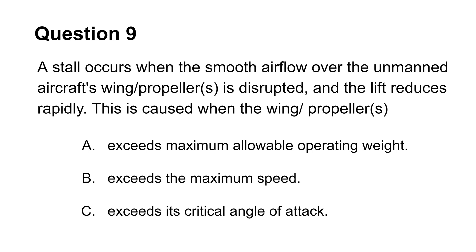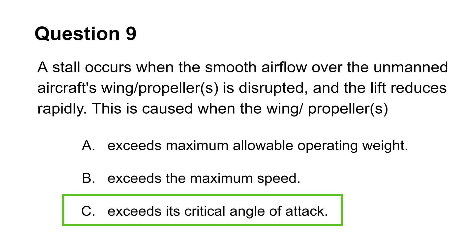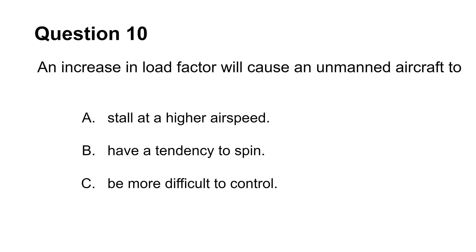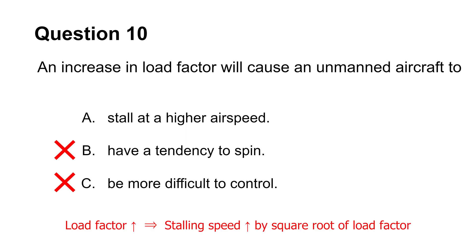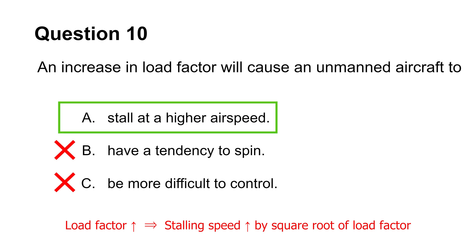This question tests your knowledge of stalls. A stall happens when an aircraft flies at an angle of attack that exceeds the critical angle of attack. The critical angle of attack does not depend on speed or weight. This makes choice C the answer. This question tests your understanding of the relationship between the load factor and airspeed. Choice B is incorrect — an aircraft's tendency to spin is independent of load factor increase. Choice C is incorrect too, as an aircraft's controllability depends on its balance and overall stability. Recall, the stalling speed is the minimum speed that the aircraft must fly to avoid a stall. The stalling speed increases in proportion to the square root of the load factor. This makes choice A the answer.